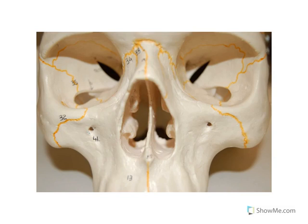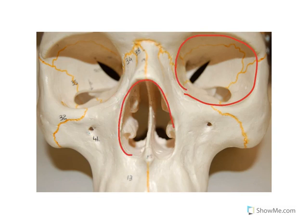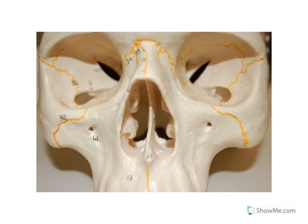In this lesson, we're going to continue looking at structures of the skull, looking through the two primary apertures or holes that have structures in them. One of them is the eye socket or the eye orbit, and the other one is the nasal aperture, or the nose hole. We'll take a look at these and see what we can see in them.